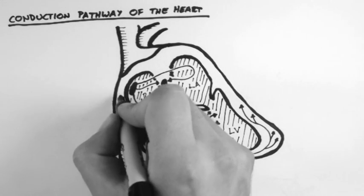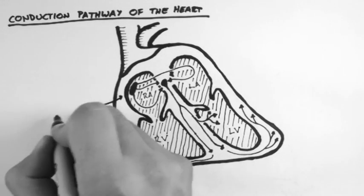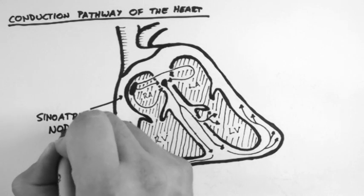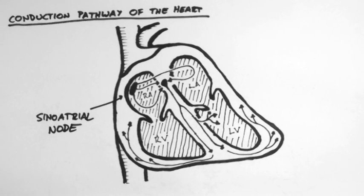So the signal originates in the sinoatrial node also known as the SA node. And this signal kicks off the conduction pathway.